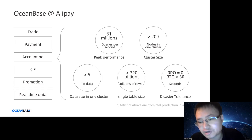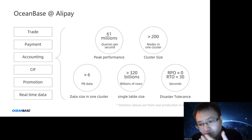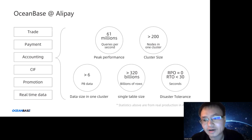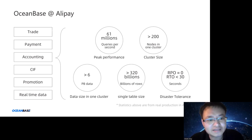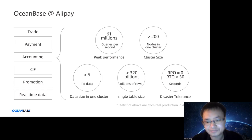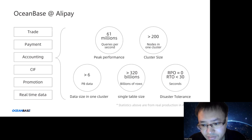OceanBase uses Paxos to achieve high availability. We have RPO equals zero and RTO less than 30 seconds. RPO represents recovery point objective and RTO represents recovery time objective. In case of failure — whether server failure, IDC failure, or city-level failure — OceanBase can recover in less than 30 seconds without any data loss.